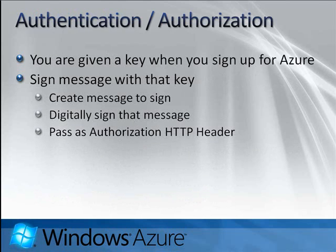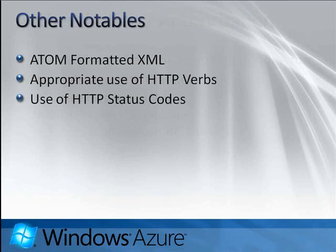Another facet is the appropriate use of HTTP headers such as HTTP status codes, or as we'll see later, authorization headers. How does authorization work? When you sign up for Azure Table Storage and get your account, you also get a key that you use to sign your messages. You create a message, digitally sign it, and then pass that as an authorization header with your message. It's actually quite simple.